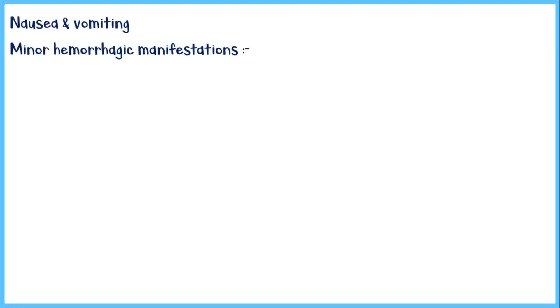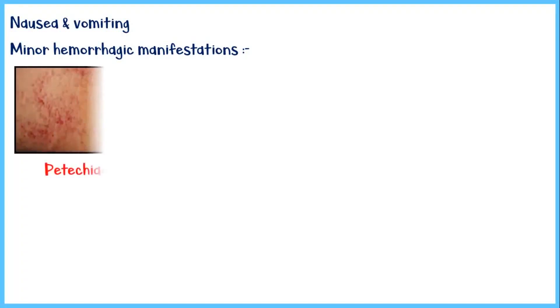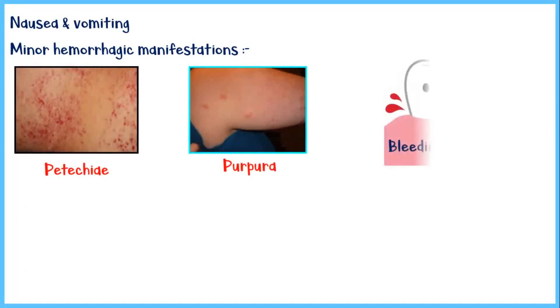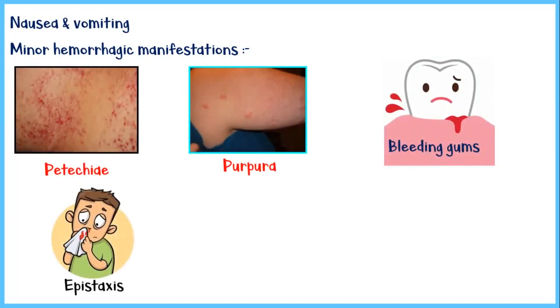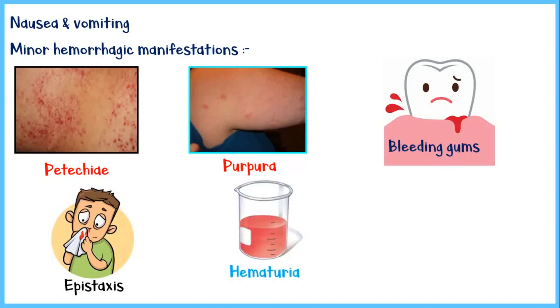The patient may additionally present with nausea, vomiting, and mild hemorrhagic manifestations such as petechiae, purpura, bleeding gums, epistaxis or bleeding from the nose, hematuria or blood in urine. A tourniquet test is positive in most patients.